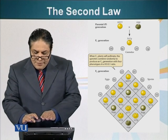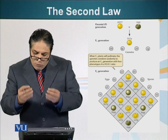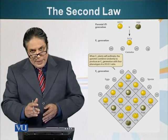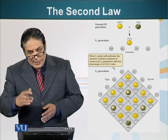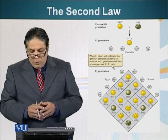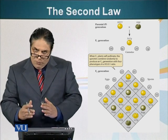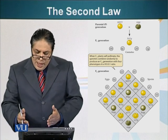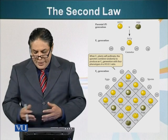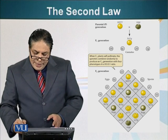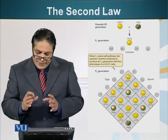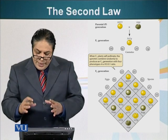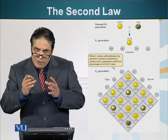The F1 generation will make four types of gametes: capital S with capital Y, capital S with small y, small s with capital Y, and small s with small y. Using a Punnett square with these four gametes on each side, we get: nine spherical yellow seeds, three spherical green seeds, three wrinkled yellow seeds, and one wrinkled green seed — a 9:3:3:1 ratio.